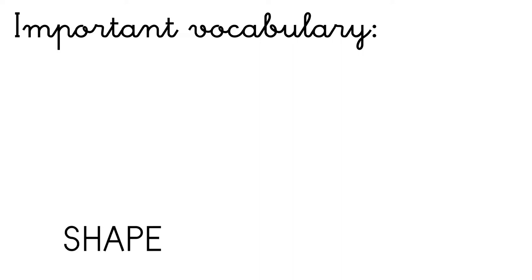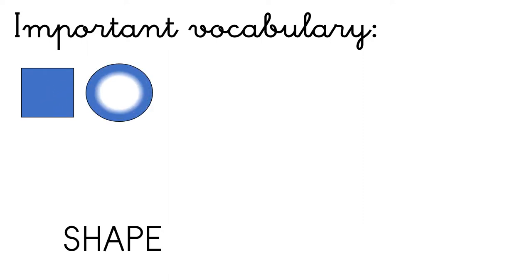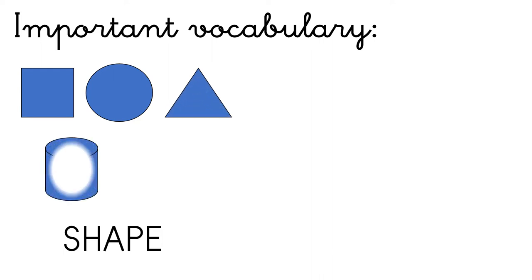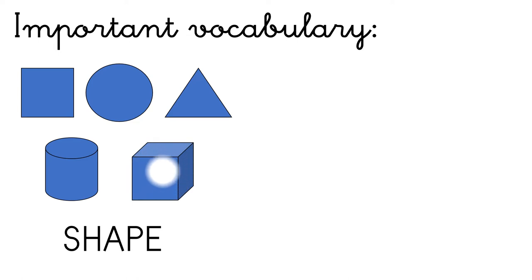Some important vocabulary of this unit is the word shape, i.e. the form that an object has got. For example, it can be a square, a circle, a triangle, or a cylinder.